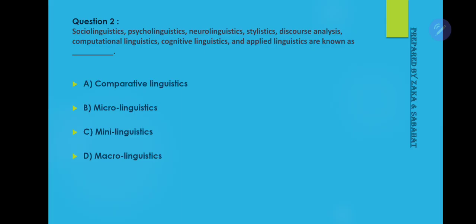Question 2: Sociolinguistics, psycholinguistics, neurolinguistics, stylistics, discourse analysis, computational linguistics, cognitive linguistics and applied linguistics are known as? The answer is not B — sorry, let me correct that. Answer B is wrong. Answer D is correct: Macro linguistics.